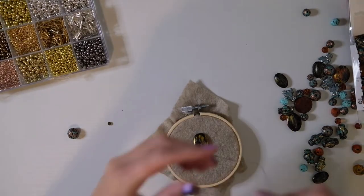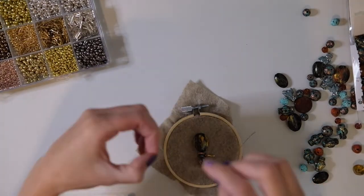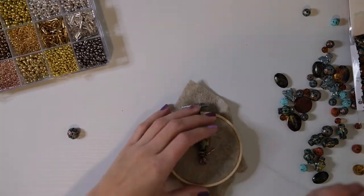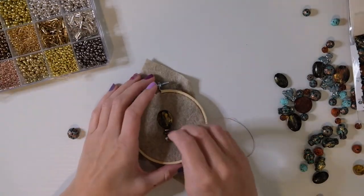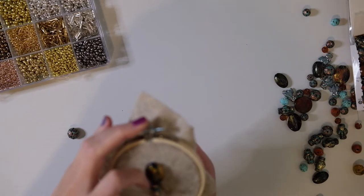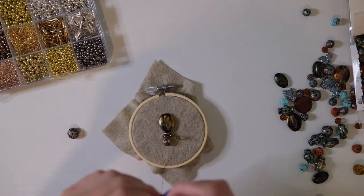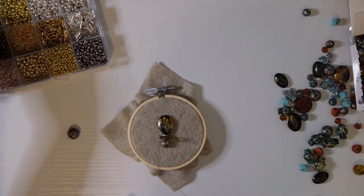For the legs I'm using seed beads. These in particular are an assortment of metal tones. To make all eight legs, I'm just alternating the thin long seed beads with the small round seed beads.